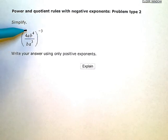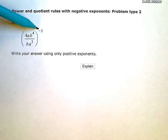So, I have a fraction or a quotient here inside the parentheses, and the entire thing is raised to the negative third power.